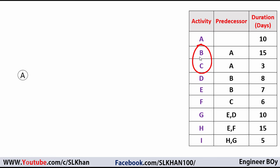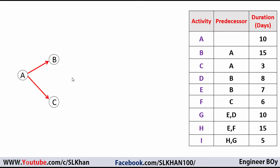Activity B and Activity C both depend on Activity A, which means Activity A is the predecessor to both. Activity B and C can start once Activity A is completed. We draw arrows from Activity A and then develop nodes for Activity B and C.